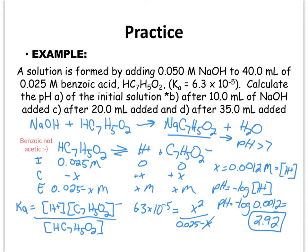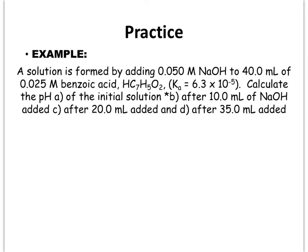Anytime you're asked to calculate the initial pH, remember this is a weak acid or base, so you have to set up an ICE table to find it. Part B asks us to solve for the pH after 10 milliliters of the NaOH has been added. In a weak-strong titration problem, any point from the initial pH up to the equivalence point is a buffer region, so we need to determine whether we've reached the equivalence point yet.